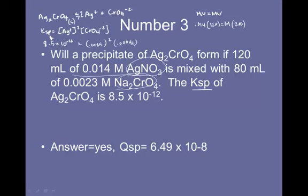Here's the answer. QSP, or the value of Q that I get from plugging information into KSP formula, is 6.49 times 10 to the negative 8. I actually have to compare that number to the known KSP value. Remember, the KSP is the maximum concentration to be soluble. Well, if 8.5 times 10 to the negative 12 is the maximum concentration, we've exceeded that. 6.49 times 10 to the negative 8 is actually larger than it. So that's why the answer is yes, a precipitate will form.